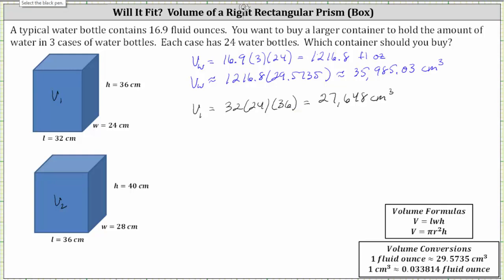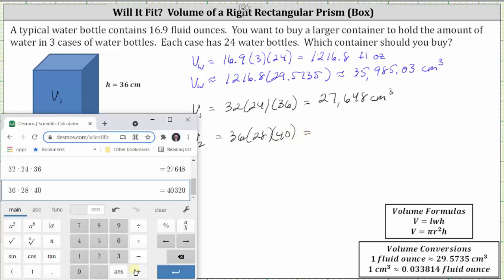Now let's find the volume of the second container, V sub two. Again, the volume is equal to the length times the width times the height, which is equal to 36 times 28 times 40. The units here are in centimeters, and therefore the volume will be in cubic centimeters. We get a volume of 40,320 cubic centimeters.